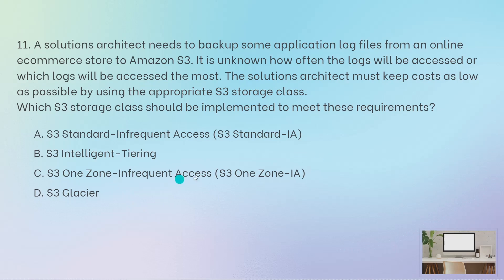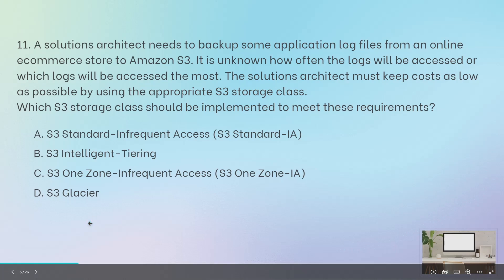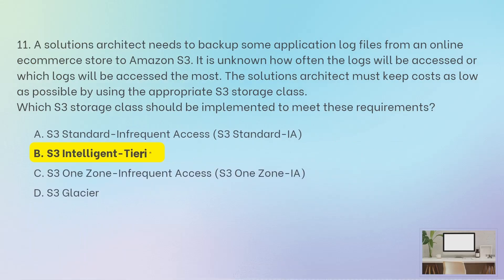Why others are not correct: One Zone — they have not specified that they are okay with a zone failure, and the files can be recreated again, so One Zone is not possible. S3 Standard Infrequent Access cannot be used because you do not know the pattern, so how do you know it is infrequent access? Glacier is used when you want to archive something. So the correct answer is S3 Intelligent Tiering when you do not know the pattern of how often the files are going to be accessed.